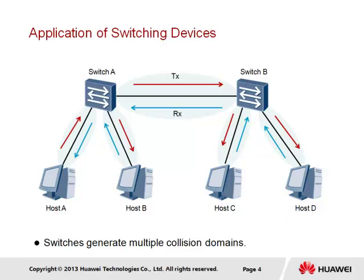Transmission over such media safely allows for bidirectional full duplex transmission over separate wire pairs for isolated transmission and reception of data. The example here shows the individual collision domains that exist and the general simultaneous bidirectional traffic flow that is supported.